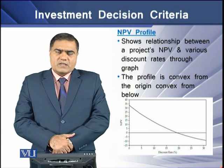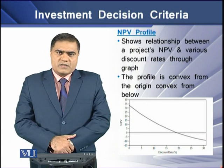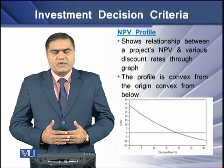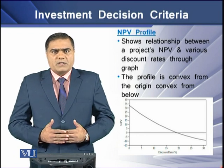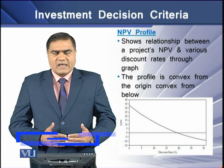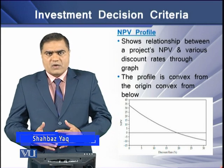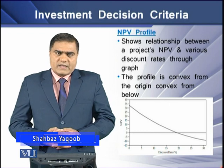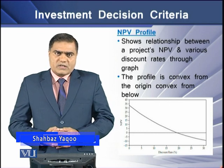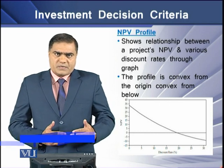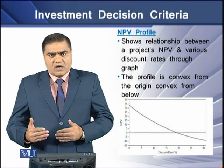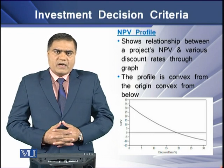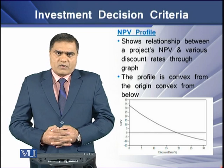The NPV profile is a graph that shows the relationship between multiple NPVs against corresponding discount rates. In the NPV profile, the relationship between NPV and the discount rate is downward sloping, and the curve is convex from the origin.